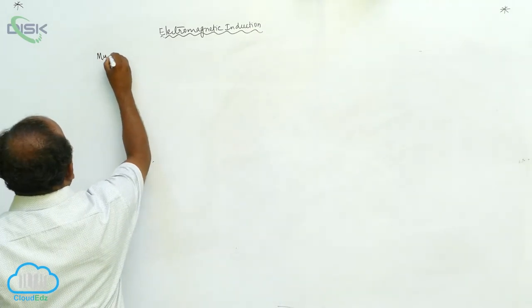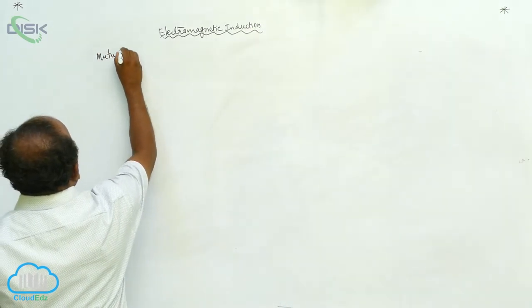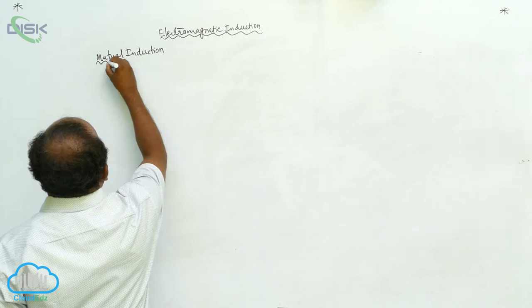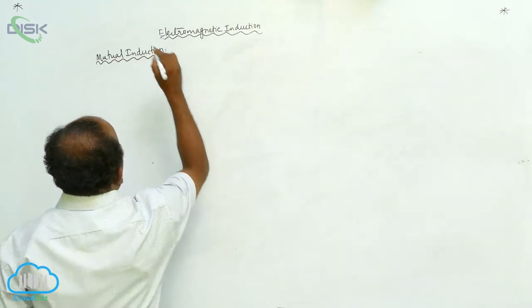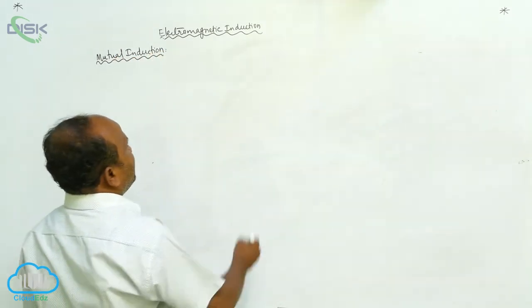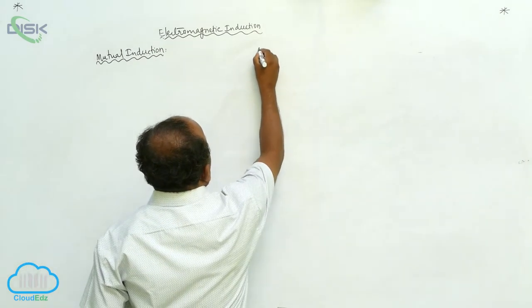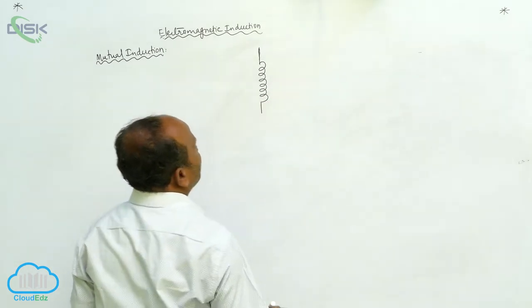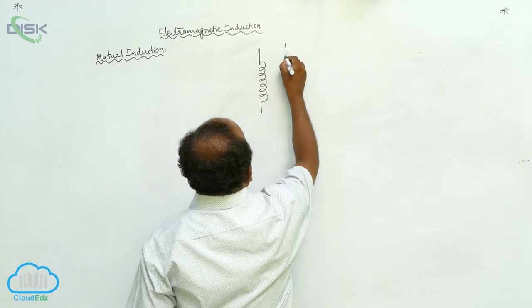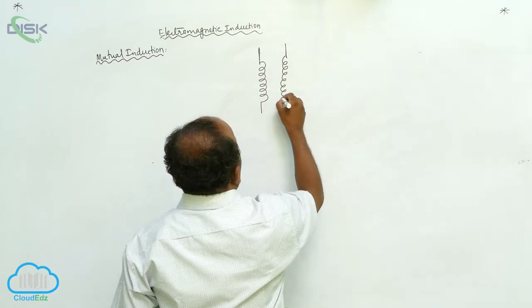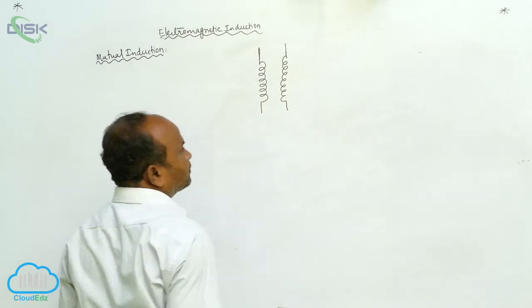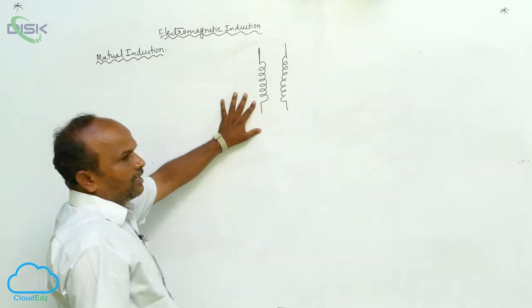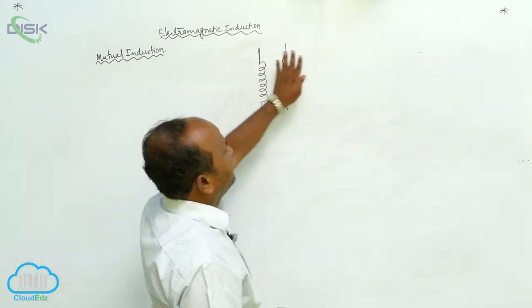Mutual induction. There are two coils. Now in the coils, if I change the current — let us consider this is the first coil and this is the second coil.